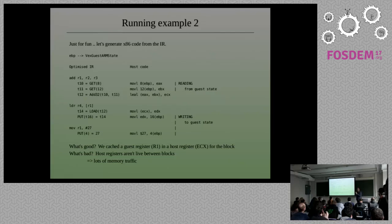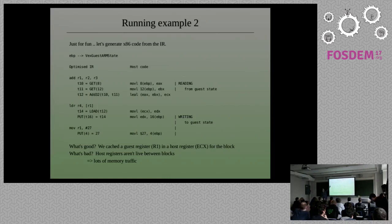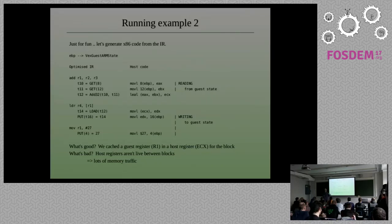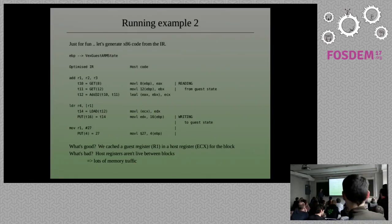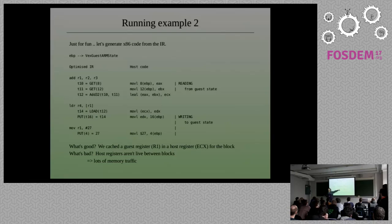I'm going to show generating x86 code from the IR, even though we put ARM in the pipeline to start with. Valgrind never actually operates in a cross-architecture mode, but it was designed so that you could do that if you really wanted to. We decided the EBP register points at the guest state. For these two fetches of the guest state we're loading two x86 registers, then adding them together — it's pretty straightforward translation. Then we load from ECX, and put the two values for R4 and R1 back in the guest state. The good thing is we've managed to hold in ECX the value of R1 across multiple guest instructions.